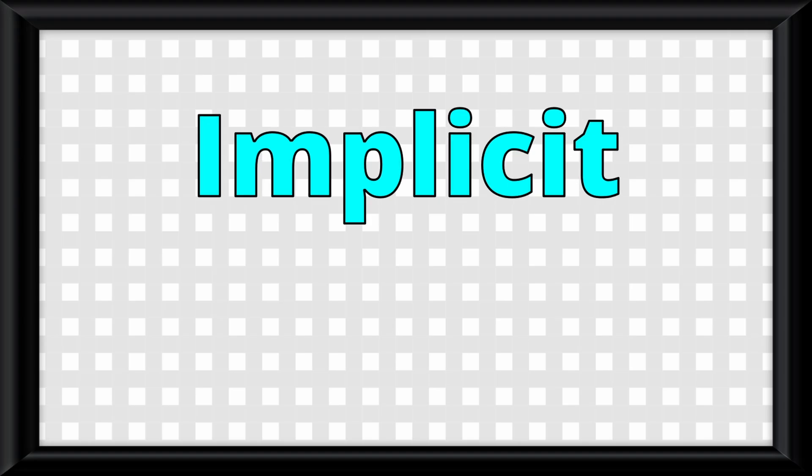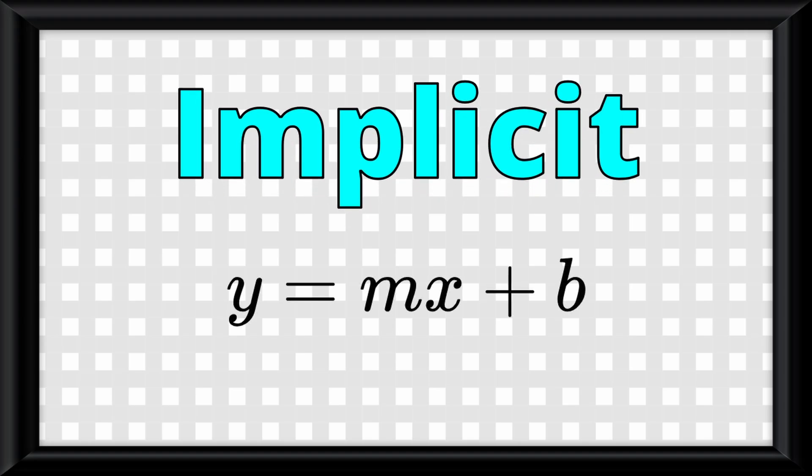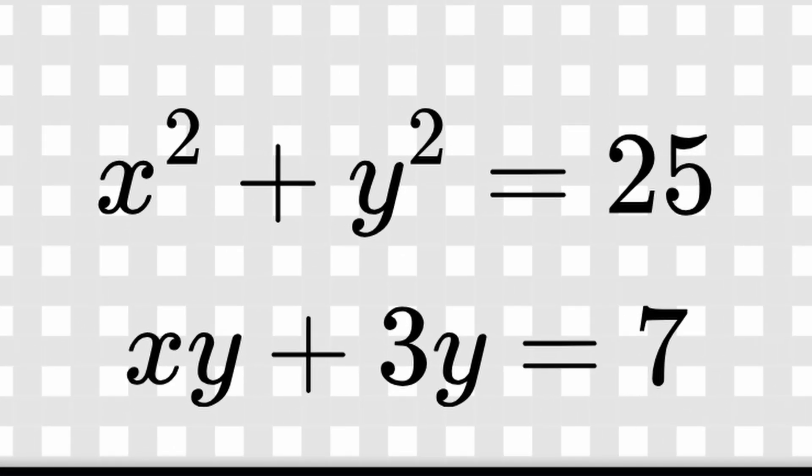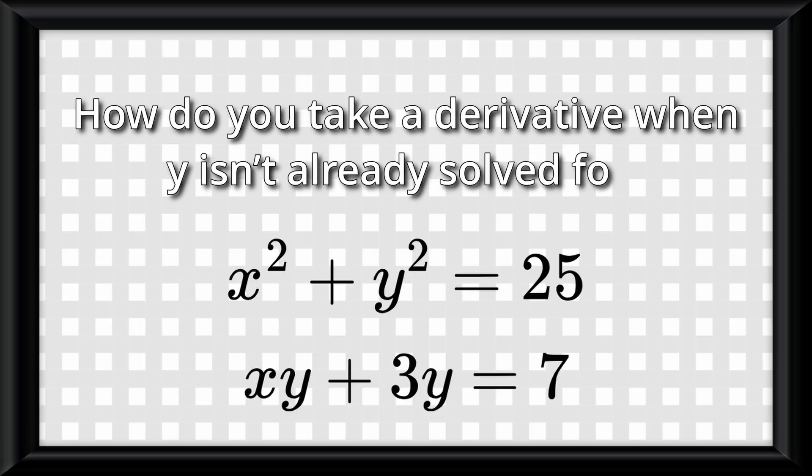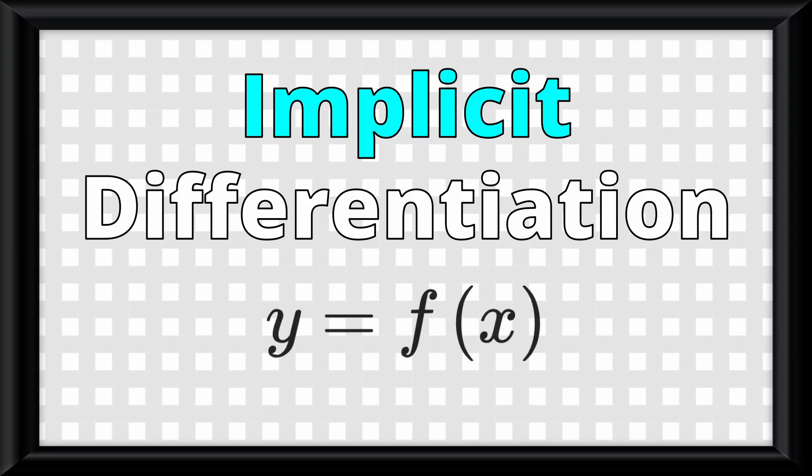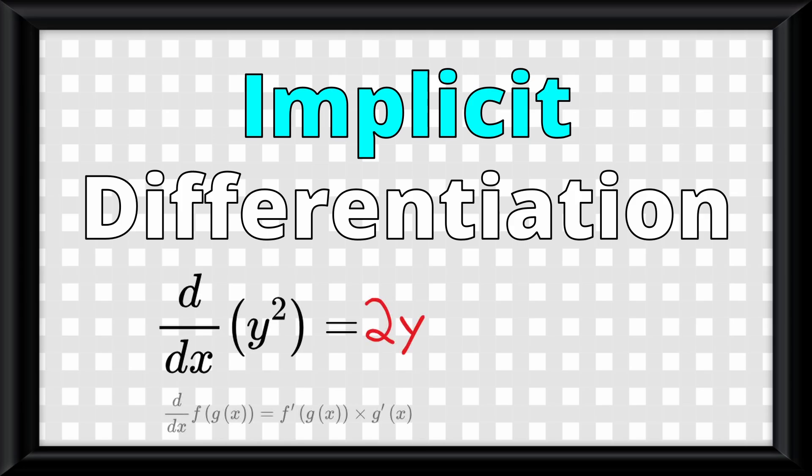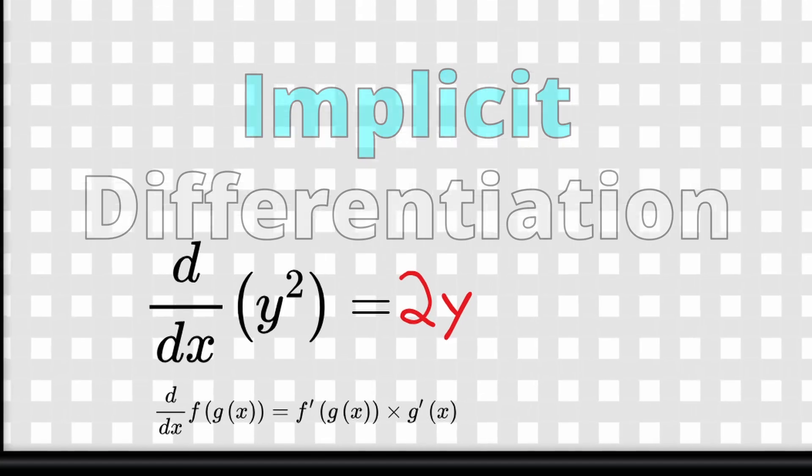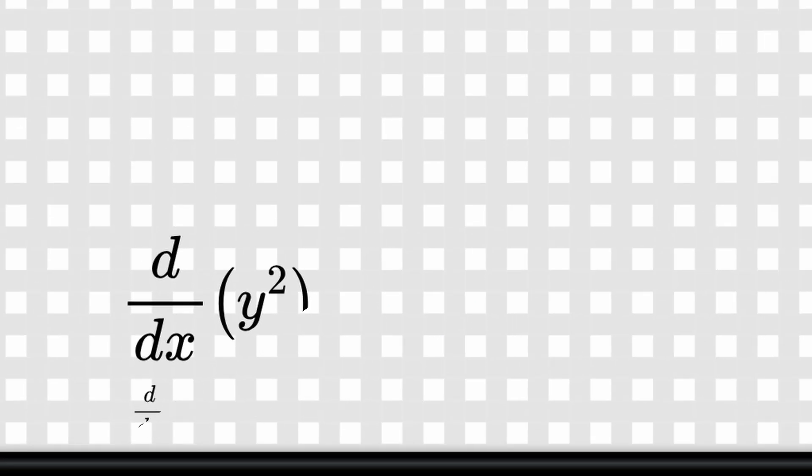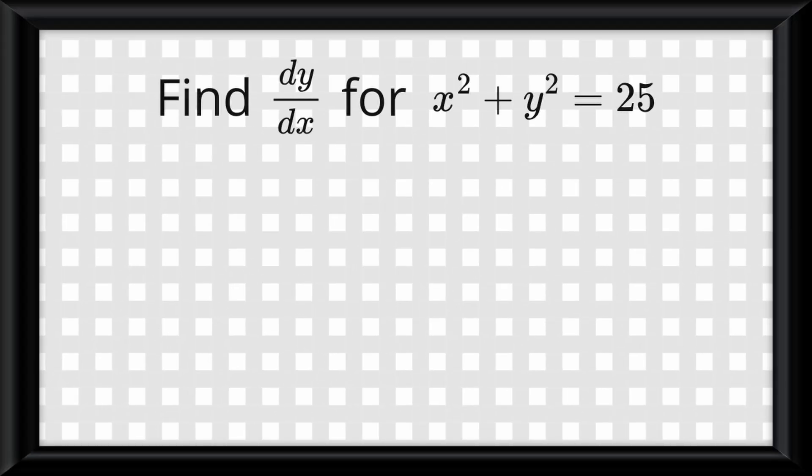Now we are going to move on to something called implicit differentiation. So first, what even is an implicit equation? Simply put, it's just an equation where y isn't isolated on its own side. Instead of something like y equals x squared, which is explicit, you'll see things like x squared plus y squared equals 25, or xy plus 3y equals 7, where x's and y's are tangled together. So the question becomes, how do you take a derivative when y isn't already solved for? Here is the idea. When we differentiate implicitly, we treat y as a function of x. That means when we take the d dx of something like y squared, we don't just say 2y. We have to use the chain rule because y itself is a function of x. So the correct derivative of y squared isn't just 2y, it is 2y times the dy dx.